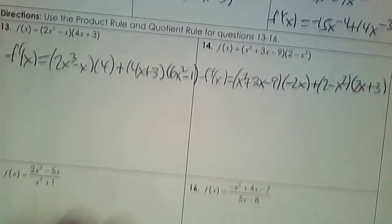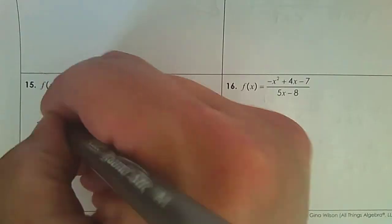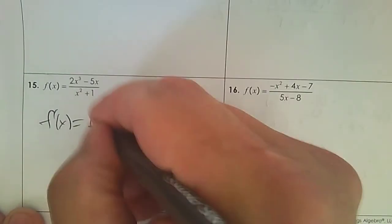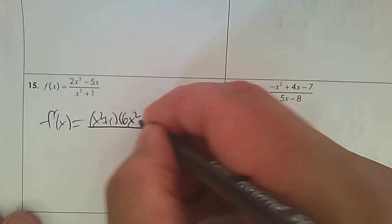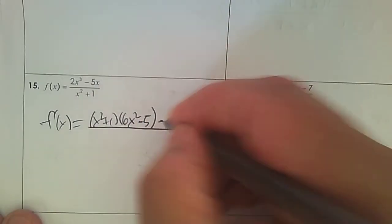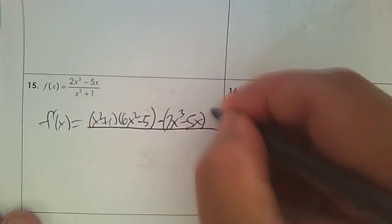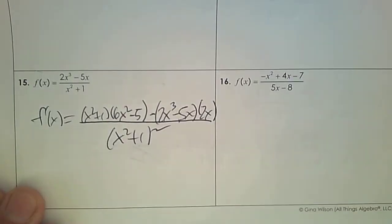Now, 2 more. The quotient rule. So here we go — big healthy fraction. The bottom times the derivative of the top: 3 times 2 is 6x squared, negative 5x, negative 5. Subtract the top, 2x cubed subtract 5x, times the derivative of the bottom, 2x. Then take whatever is in the bottom, square it, and you just did the quotient rule.